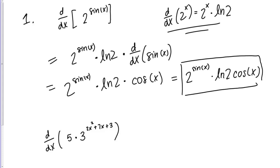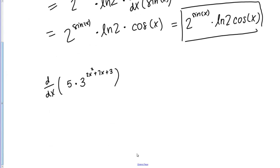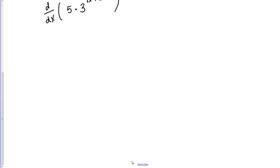Let's look at one more example really quickly. This example is still at that same form: a number, in this case 3, raised to a function—in this case, a quadratic polynomial. The only difference here is I have this 5 out front.